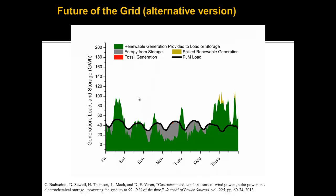Another version of the future grid shows completely renewable generation — shown in green — alongside storage, shown in gray. At some points, renewable generation will exceed usage and be pumped into batteries or other energy storage. When there isn't much renewable generation, it will come back out of storage. Large-scale energy storage on the grid is something else you might see in your career.